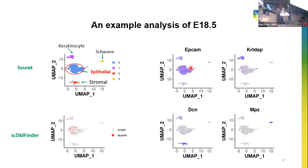The cell types were annotated by using known marker genes. For example, we used EPCAM for epithelial cells and DCN for stroma cells. We are only interested in the epithelial cells, so we removed all the non-epithelial cells for each sample. Additionally, doublets are a significant issue in single-cell RNA data analysis, so we also removed all potential doublets predicted by the doublet prediction software ScDblFinder.